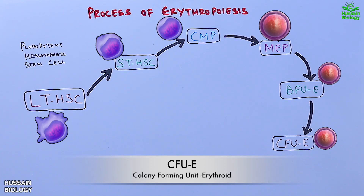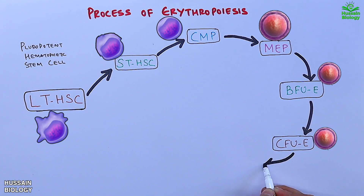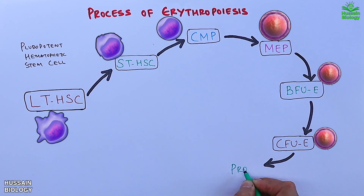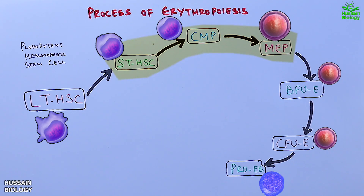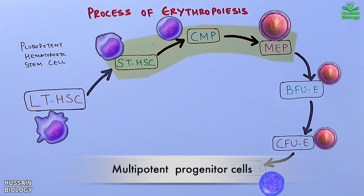These CFU-E cells differentiate into proerythroblasts, from which we get the erythrocyte precursor lineage. Note that STHSC, CMP, and MEP are classes of multipotent progenitor cells.